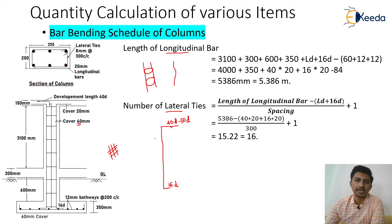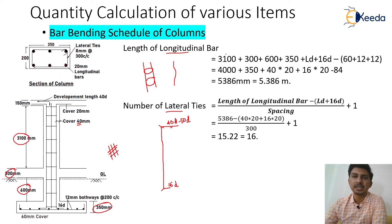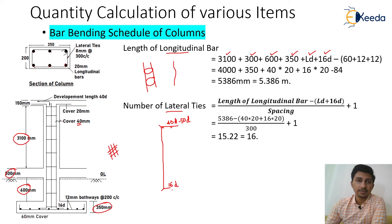To find the total vertical height, we add all vertical heights: floor to floor height 3100 mm, plinth height 300 mm, excavation 600 mm, and foundation depth 350 mm. To that we add the development length (Ld = 40d) and the L-length (16d). We then subtract the bottom offset, which accounts for the foundation cover and the two layers of foundation reinforcement bars.